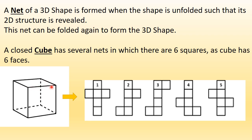Similarly, a 3D shape would have edges as well. What are edges? Edges are basically lines that are formed when two faces are meeting. Any two faces would meet at a line which is actually called an edge. So a cube has many edges.